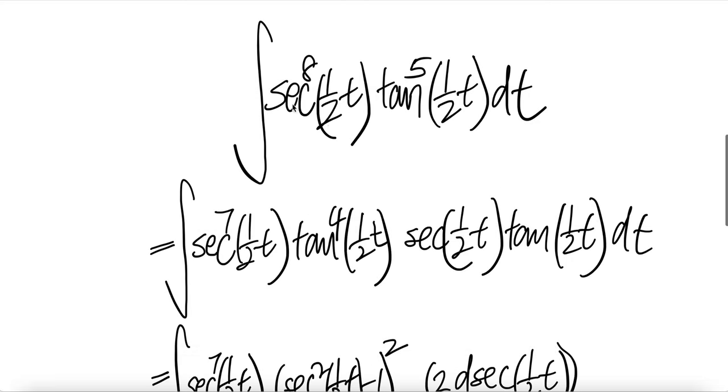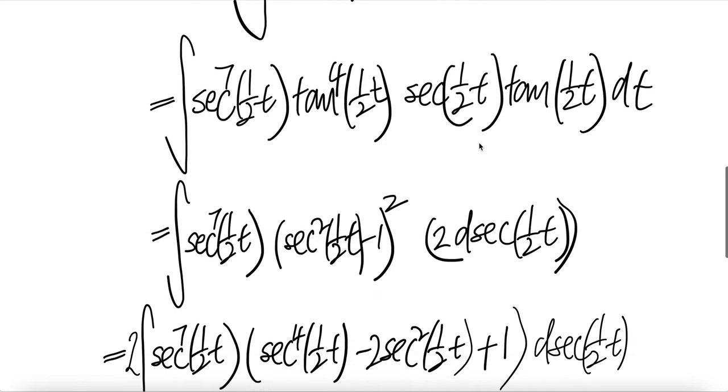Now peel off sec half t from the sec to the power eight, peel one copy out and put it here. And then for the tangent, same thing, peel one tangent half t out from this one and put it here. After you peel off one, eight becomes seven, five becomes four because one is out.